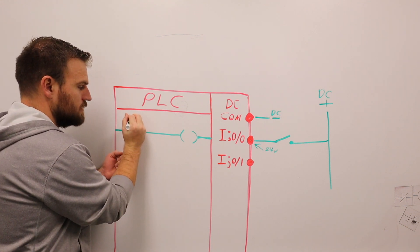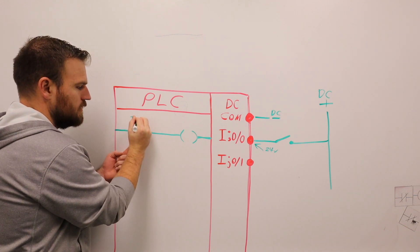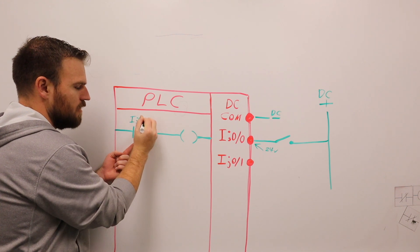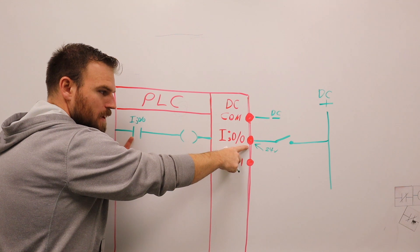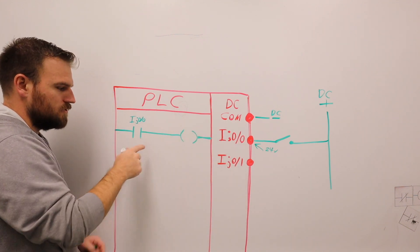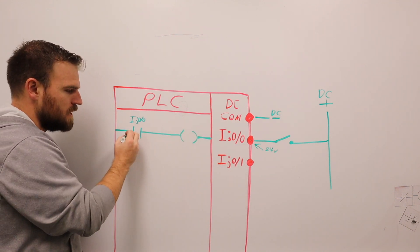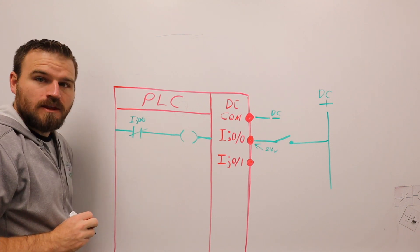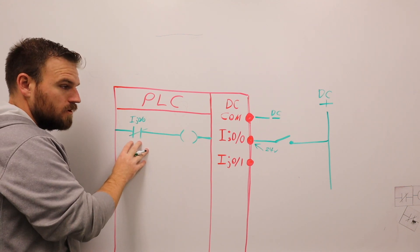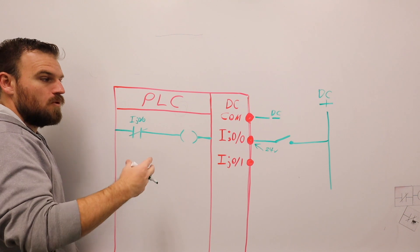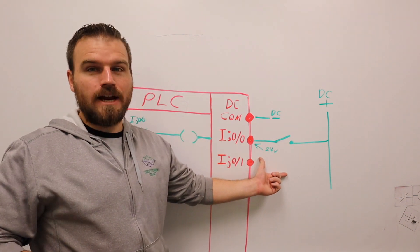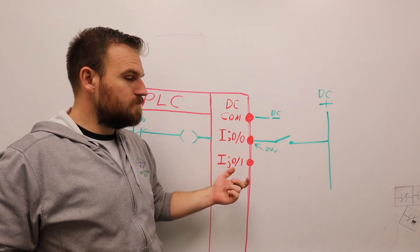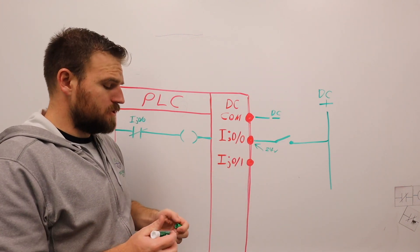So if this sees 24 volts, what it's going to do is it's going to go to whatever contact inside of here, instruction, let's call it, that has been coded or addressed. So this one will be I:0/0. If it's addressed the same as that input, when that input gets power, this will change. So suddenly it's no longer open, it will become closed. And we're going to go over this a lot more as we go along.